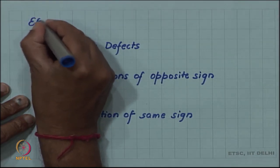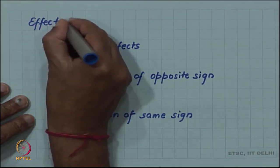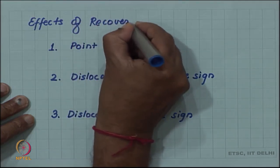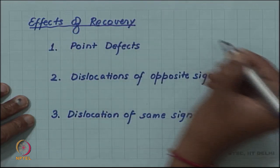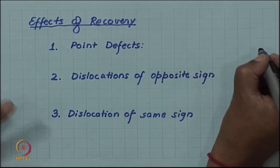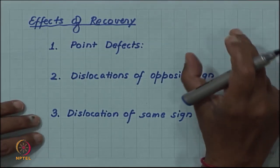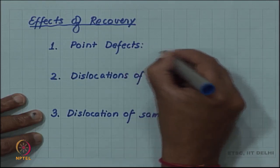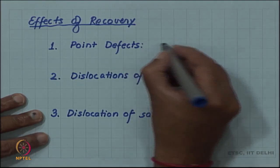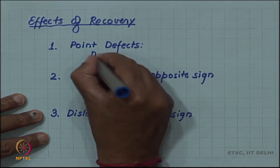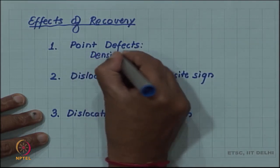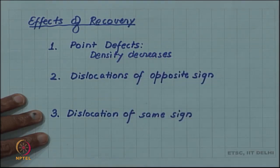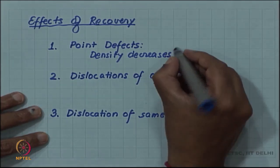Effects of recovery: During recovery, the point defects - remember during deformation there was increase in the point defect density - during recovery point defects again annihilate and the density decreases. Point defect density decreases and the point defects are annihilated.